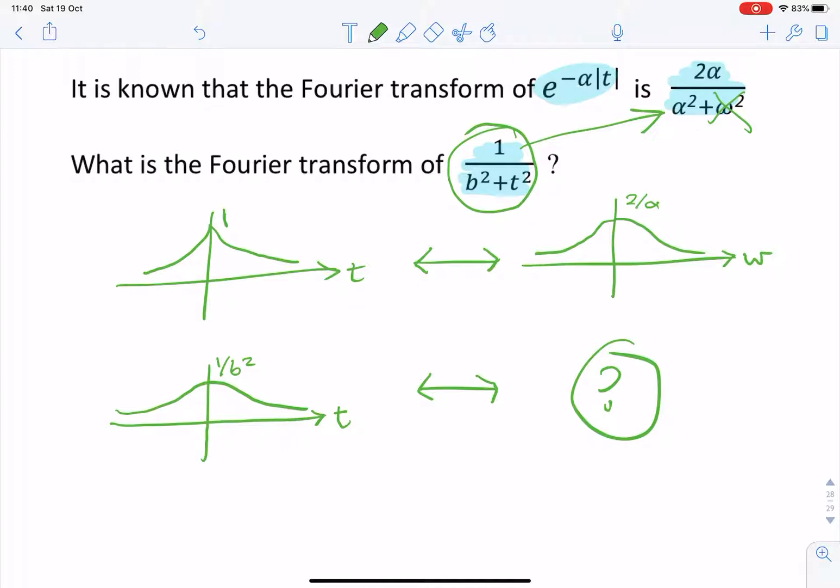So we know from the duality property that the answer will look like a double-sided exponential. We know that. But we need to know that amplitude, and we need to know the actual formula for that.